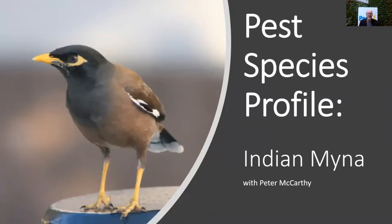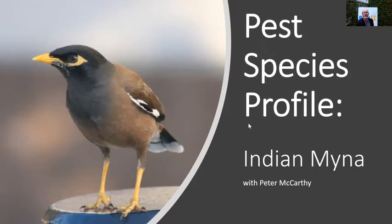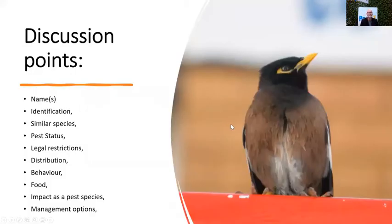This pest species, the common myna or the Indian myna, is Australia's most despised bird. From a professional's perspective, we love to hate this bird because it's just so difficult to interact with - it's a very intelligent bird species. I'm going to touch on some of those behavioural aspects. Our discussion points are going to be the same regardless of what species we're talking about: names, identification, similar species, and pest status.